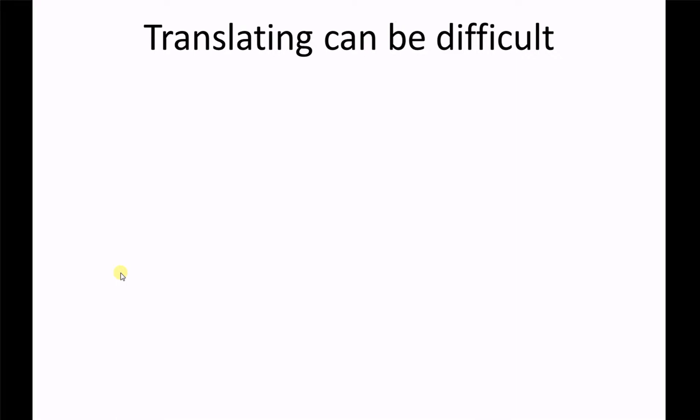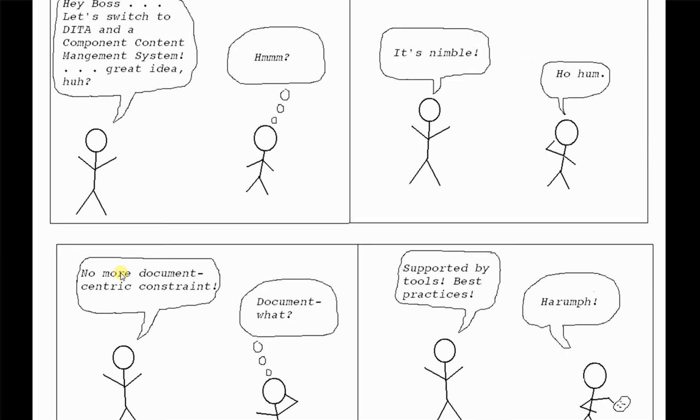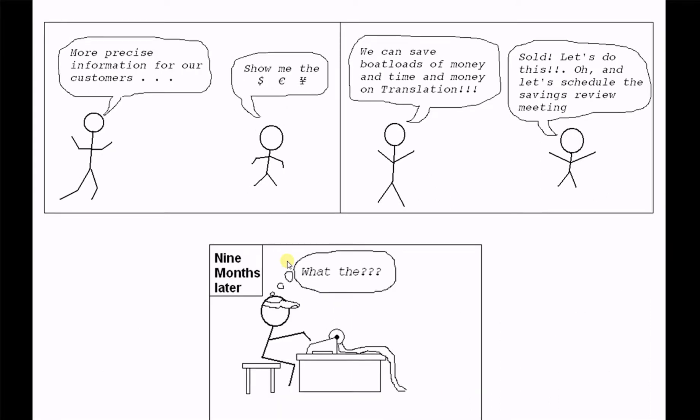Here's a somewhat common scenario. Somebody says: hey boss, let's switch to DITA — it's a component content management system, it's nimble, it's supported by tools and best practices. The boss is unimpressed until the person says we can save boatloads of money and time on translations. The boss says sold. But nine months later, when we do the calculations, we find that the savings just aren't there. That's a pitfall people can fall into.